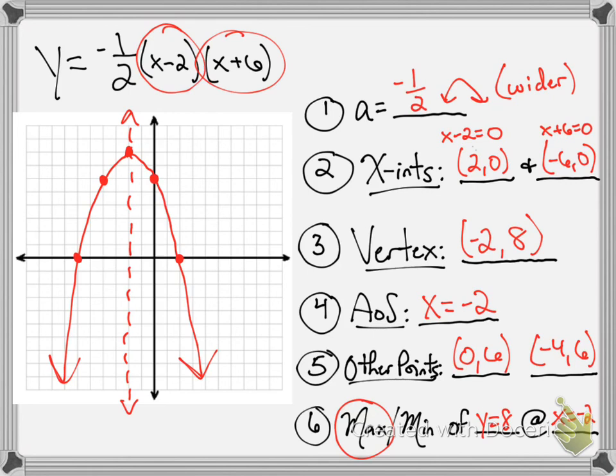So once again, that's how you graph when something is written in intercept form. As I've emphasized with the other forms, it's a matter of recognizing how the equation is structured. Standard form has its own setup. Vertex form has its own setup. And now you see with this intercept form, it has its own setup to it. Based on the way it's set up, it'll tell you what information you can pull out right away to help find everything else that you need to possibly fill in. This is how you graph a quadratic function when it is set up in intercept form.